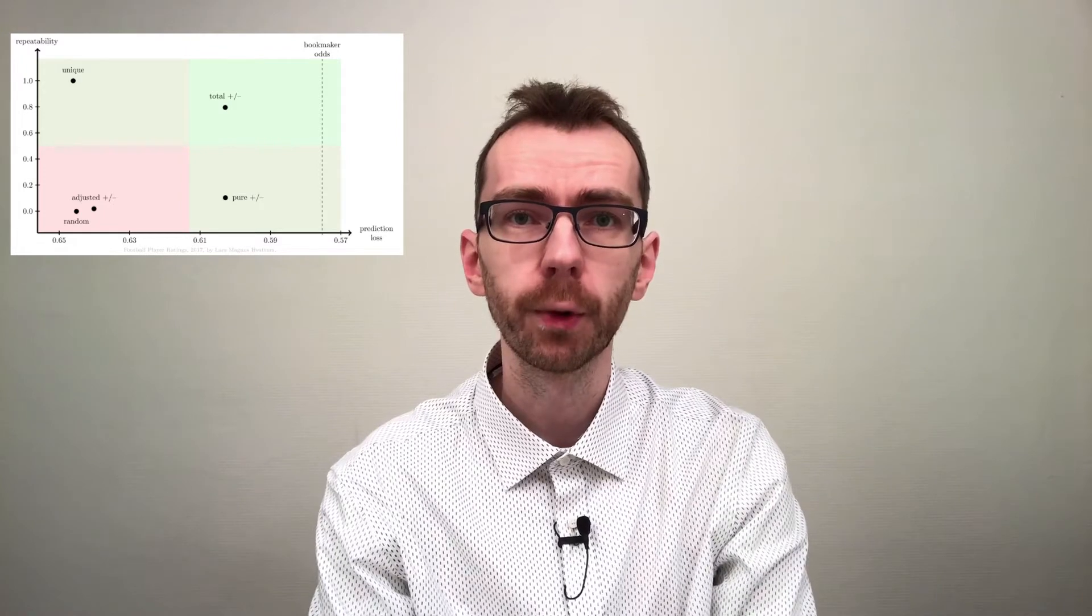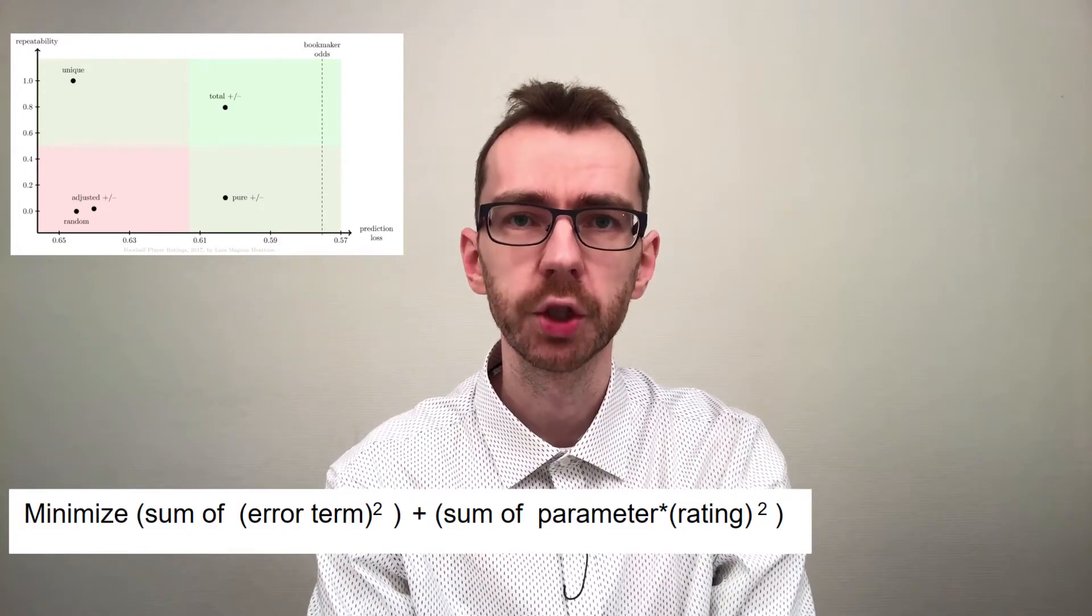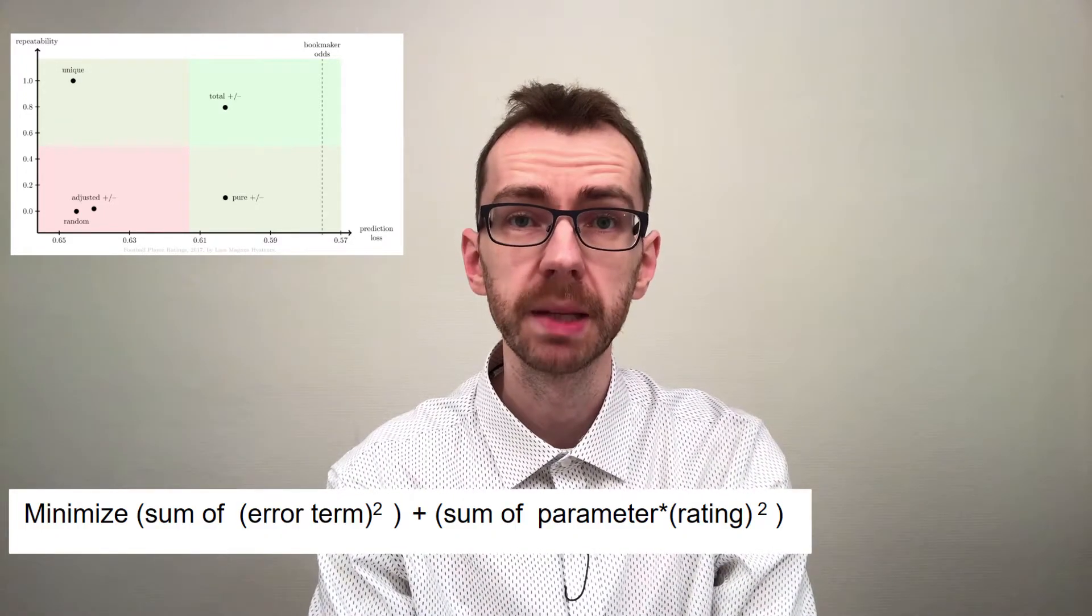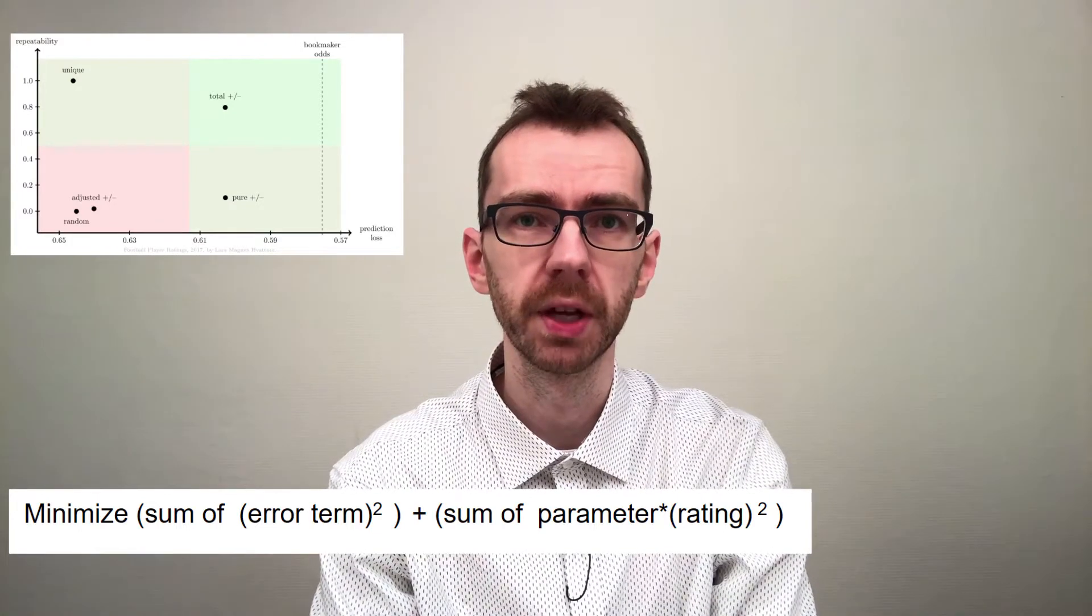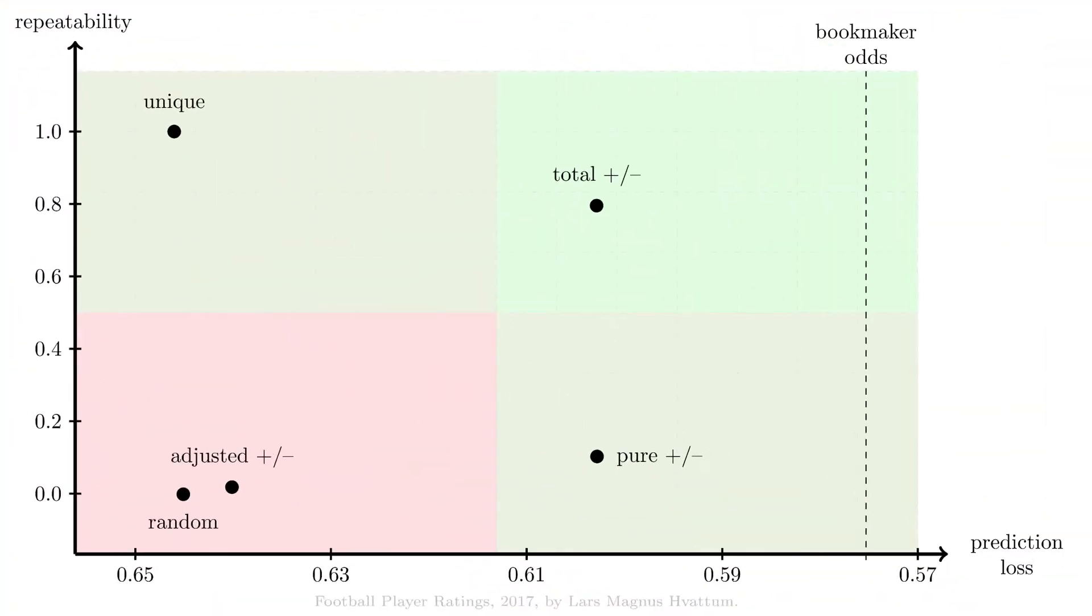Luckily, our fourth rating, the regularized adjusted plus minus rating, seemed to be able to fix some of the deficiencies of the adjusted plus minus rating. However, this requires us to find the suitable value for the regularization parameter, which if set to 0 makes regularized plus minus equal to the adjusted plus minus rating.